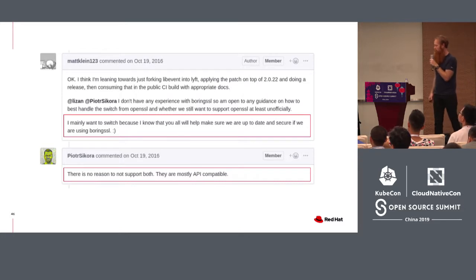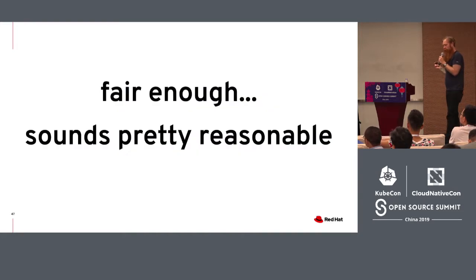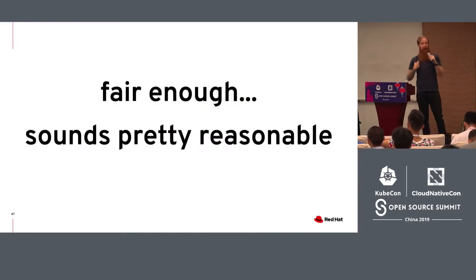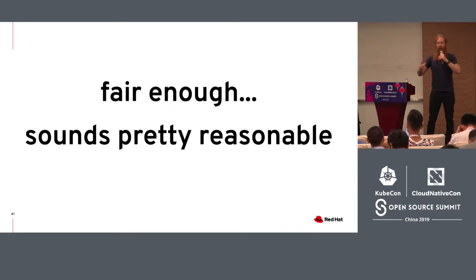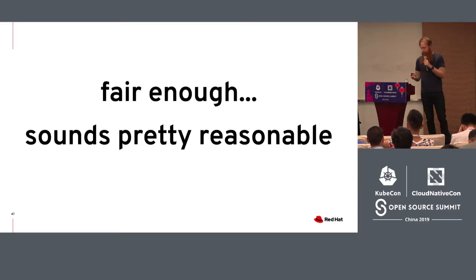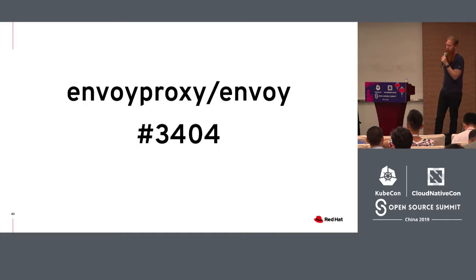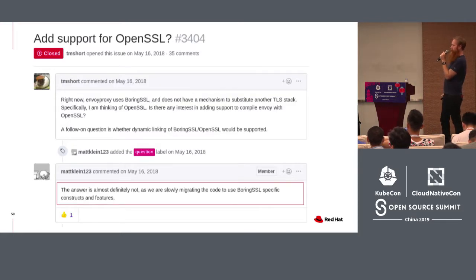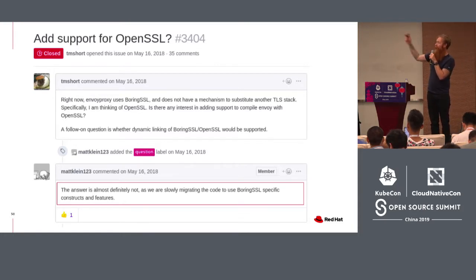And Piotr says, well, there's no reason why we can't support both — they're mostly API compatible. Sounds reasonable. Being able to maintain what matters to different groups is perfect. Unfortunately, time is a fickle mistress. Because then we get to issue number 3404, where it gets called out that the answer around adding back support for OpenSSL is absolutely not — they're migrating completely away from it. Folks from Akamai made this request because this is what they need.